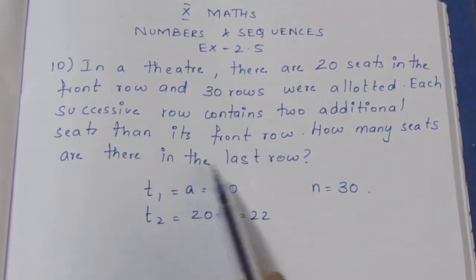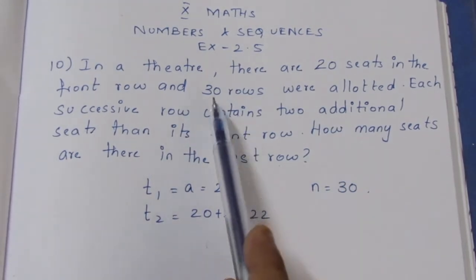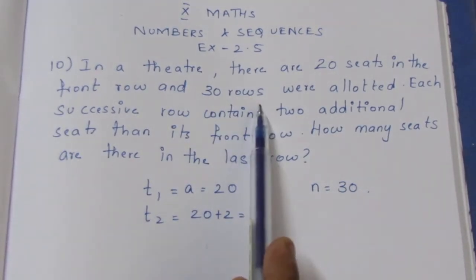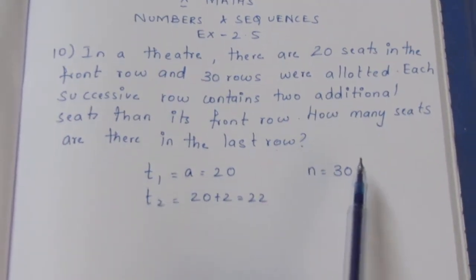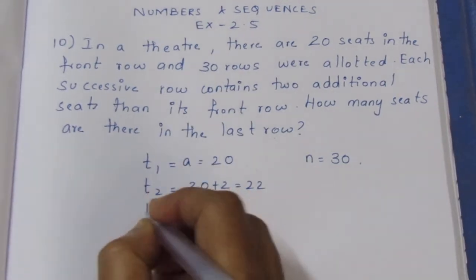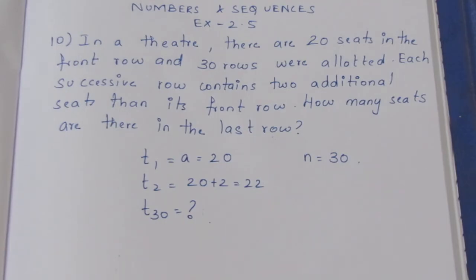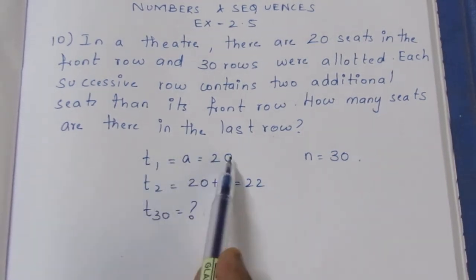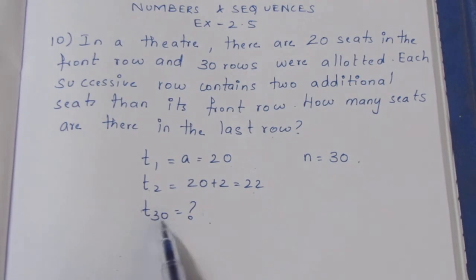How many seats are there in the last row? The last row is the 30th row. So the 30th row gives us the number of seats. T1 is the first row seats, T2 is the second row seats, and T30 is the 30th row.